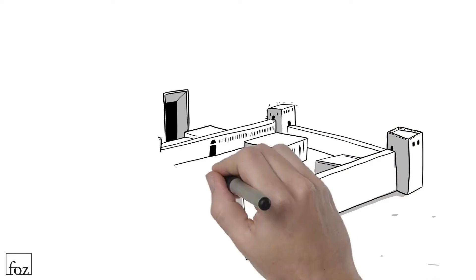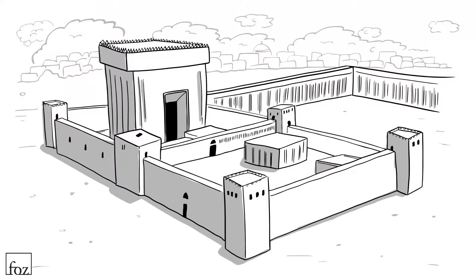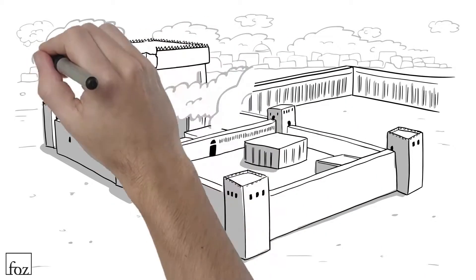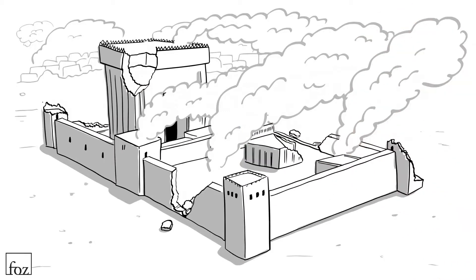The temple was rebuilt and then expanded under Roman rule. This magnificent edifice stood for another 400 years until it too was destroyed in 70 AD. The temple was engulfed in flames until all that remained was a portion of the Western Wall.